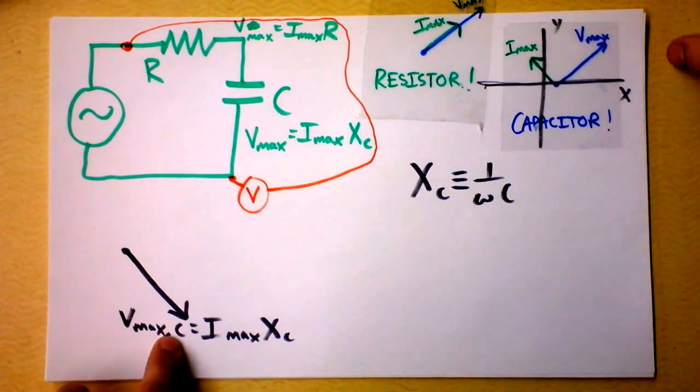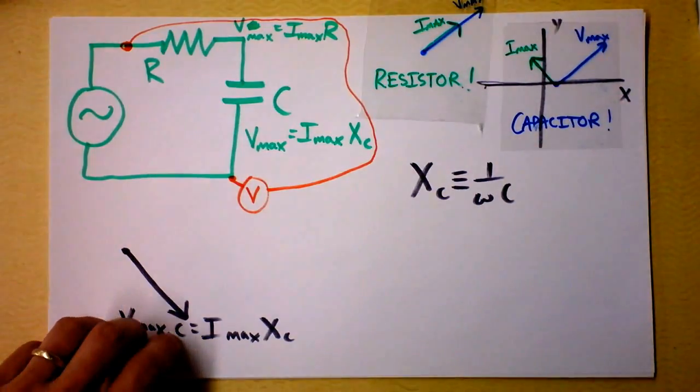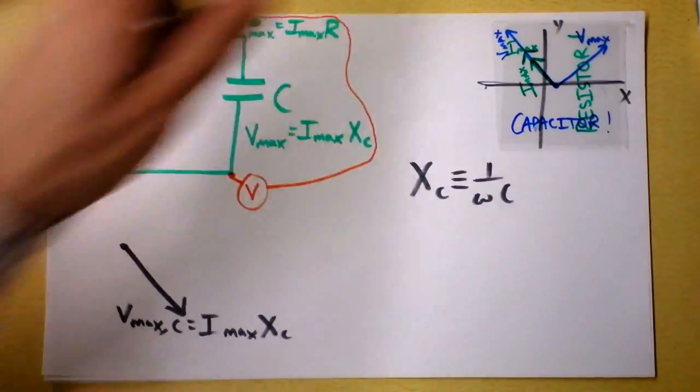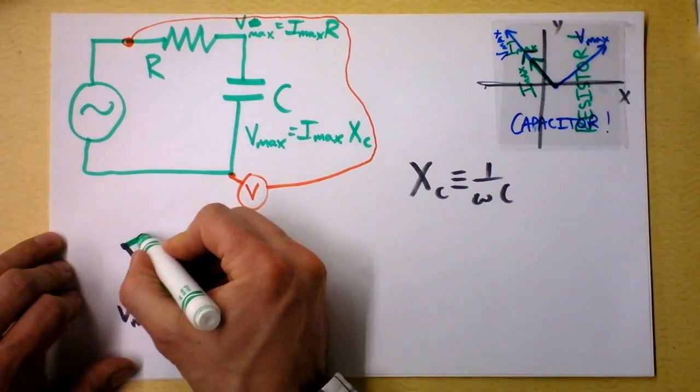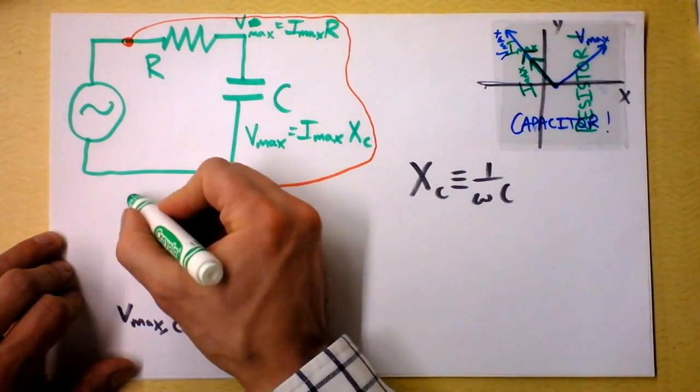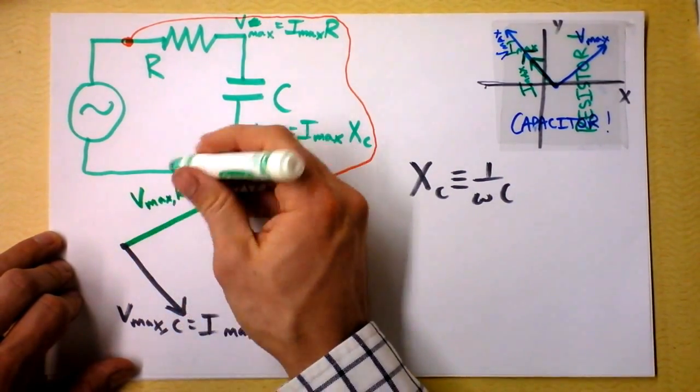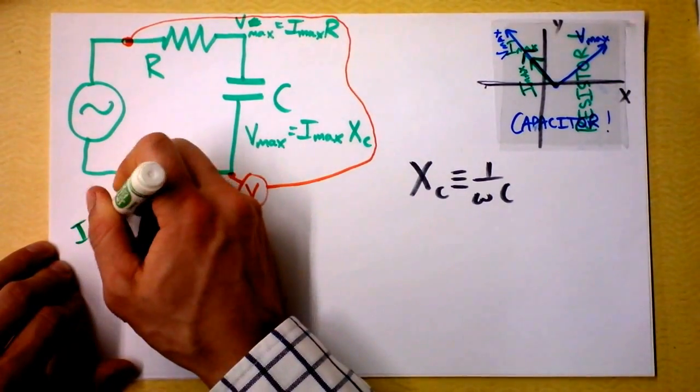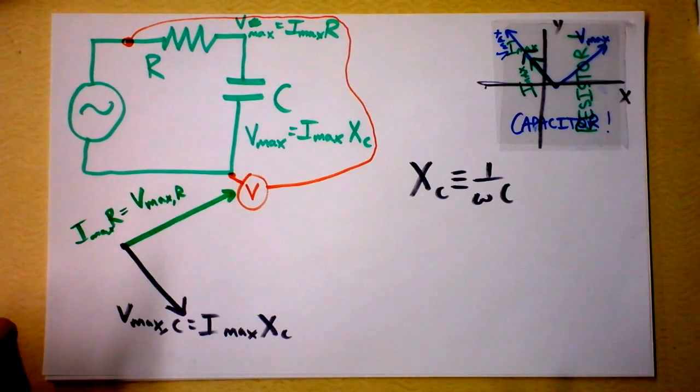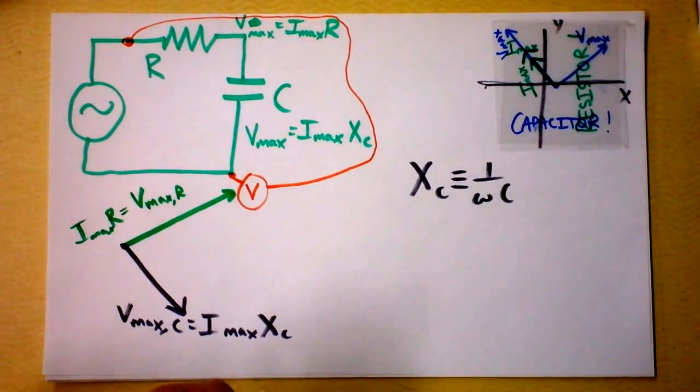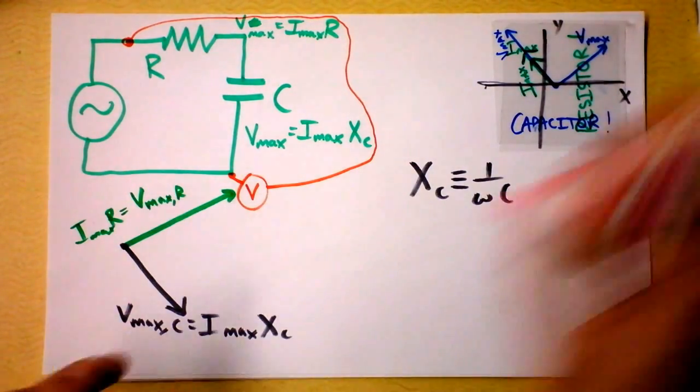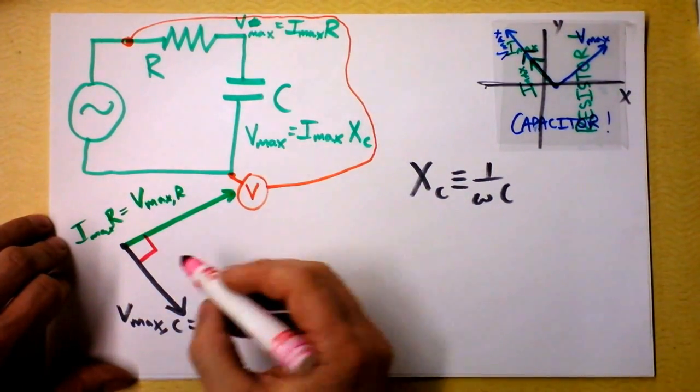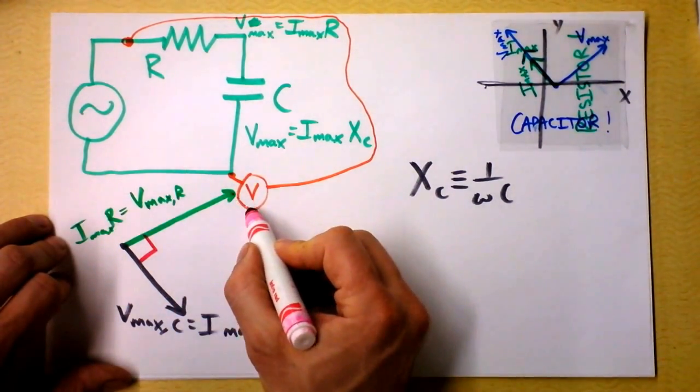So there we've got the maximum voltage across the capacitor. And then at a right angle to it, at a right angle to it, we've got the maximum voltage across the resistor, Vmax R. And we said that this is just Imax times R. And, well, if we want to know the total voltage, this is supposed to be a right angle. This is the sloppiest right angle I've ever drawn. There, now it's perfect.